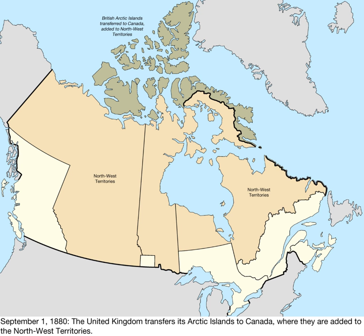The majority of the islands became part of Nunavut. Islands split between Nunavut and Northwest Territories include Victoria Island, Melville Island, Mackenzie King Island, and Borden Island.